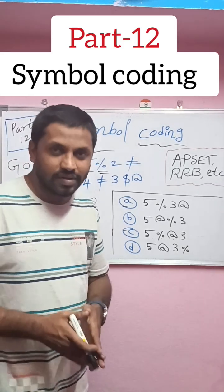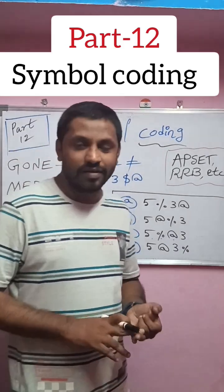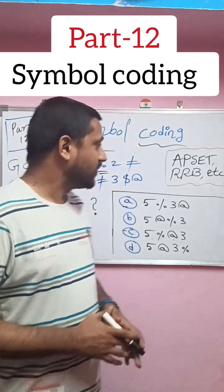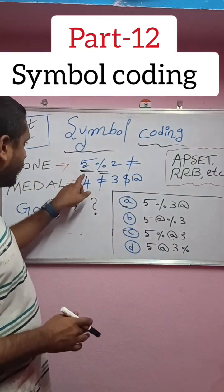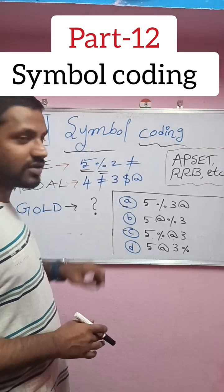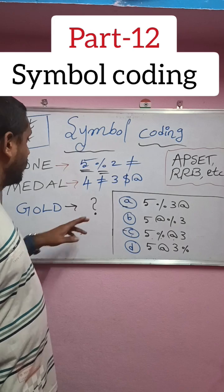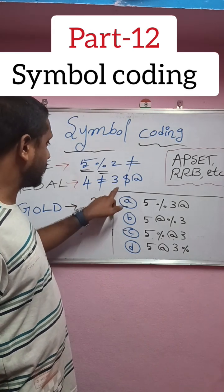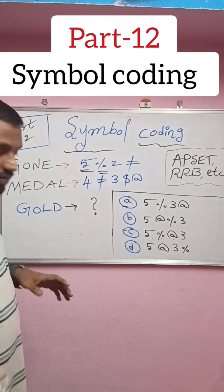Now we will start an example related to symbol coding, based on letter, number, symbol coding. GONE is coded as 5% to hash. Second one, same process: MEDAL is coded as 4 hash 3 dollars at the rate. This is the code language for the second one.